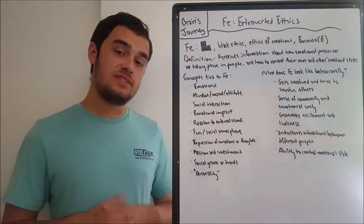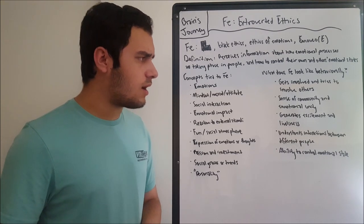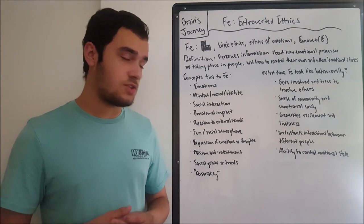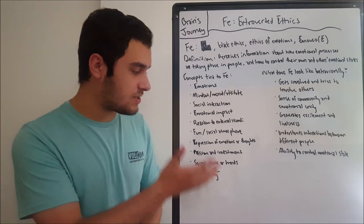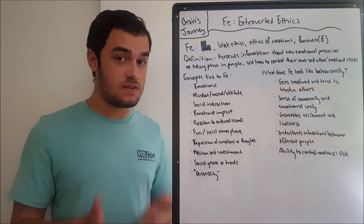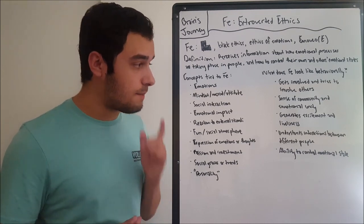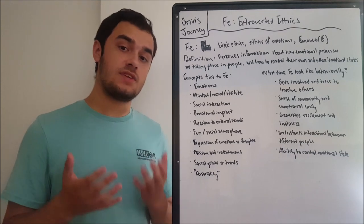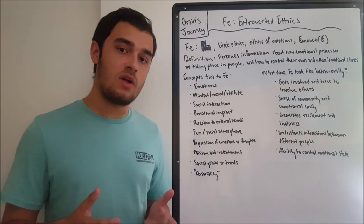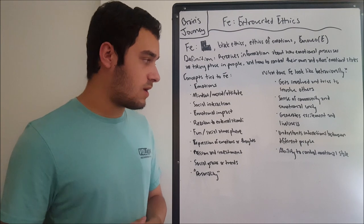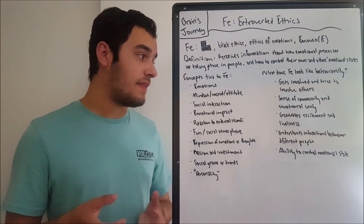Now let's look at some behavioral manifestations. FE gets involved and tries to involve other people — if it's into something, it's going to want to get others into that thing as well. It exudes passion and investment, shows others that it's invested, and tries to get others involved in its activities. It also builds a sense of community and emotional unity in the group, wanting to preserve feelings and interactions among the group, and establishing whether those interconnections are stable or unstable.